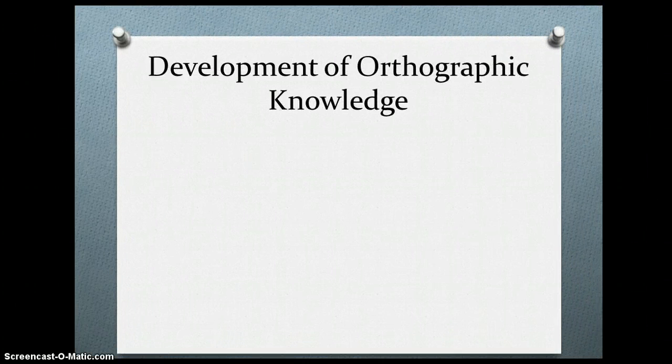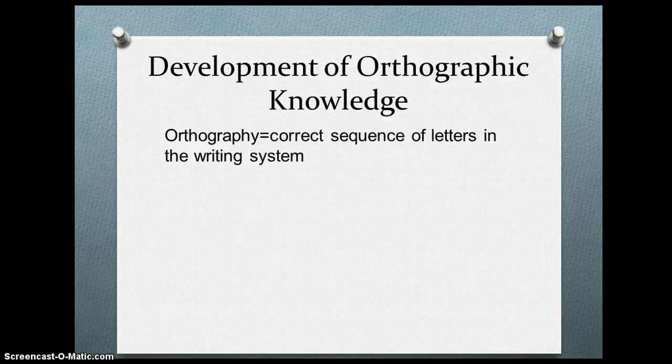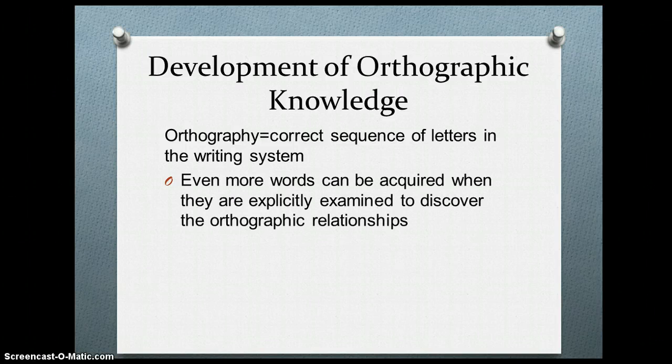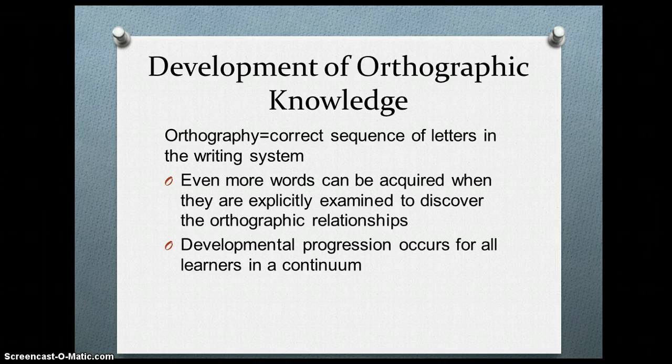Now let's talk about the development of orthographic knowledge. Orthography is the correct sequence of letters in the writing system, also known as spelling. Even more words can be acquired when they are explicitly examined to discover orthographic relationships. Like phonics by analogy — if you know the word 'make,' you should be able to recognize the word 'take.' The same applies with spelling, where you can acquire more words when you explicitly examine them for patterns. There is a developmental progression that occurs for all learners, following a continuum which we will discuss shortly.